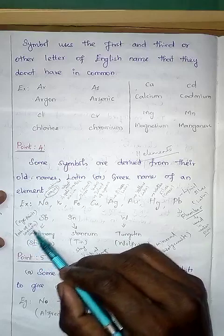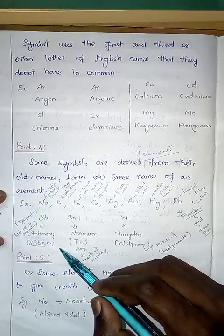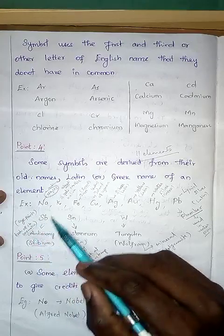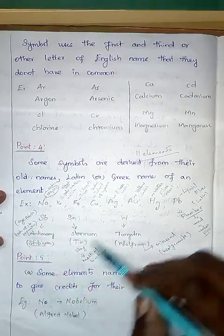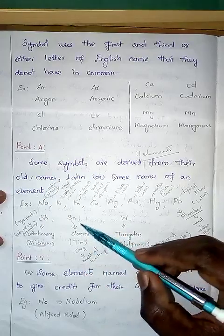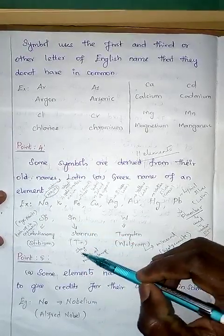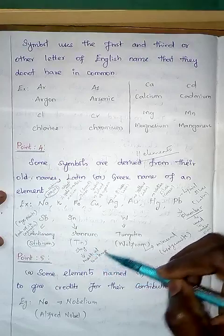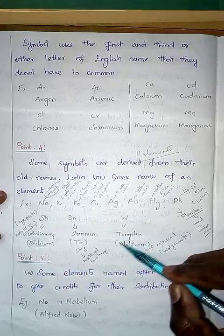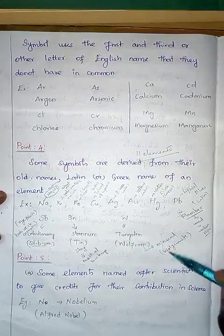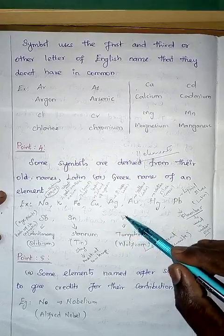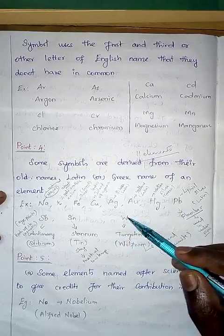Antimony has the symbol Sb from the Latin stibium. Stibium means eye paint — in ancient days, compounds of antimony were used as cosmetics. Tin has the symbol Sn from the Latin stannum, meaning melt at low temperature. Tungsten has the symbol W from wolfram, which comes from the mineral wolframite that contains tungsten as its main metal.